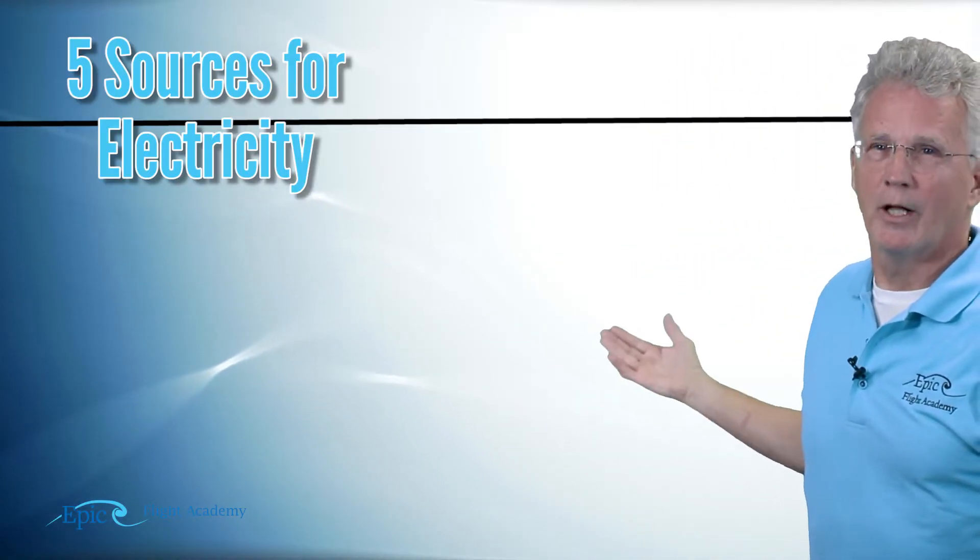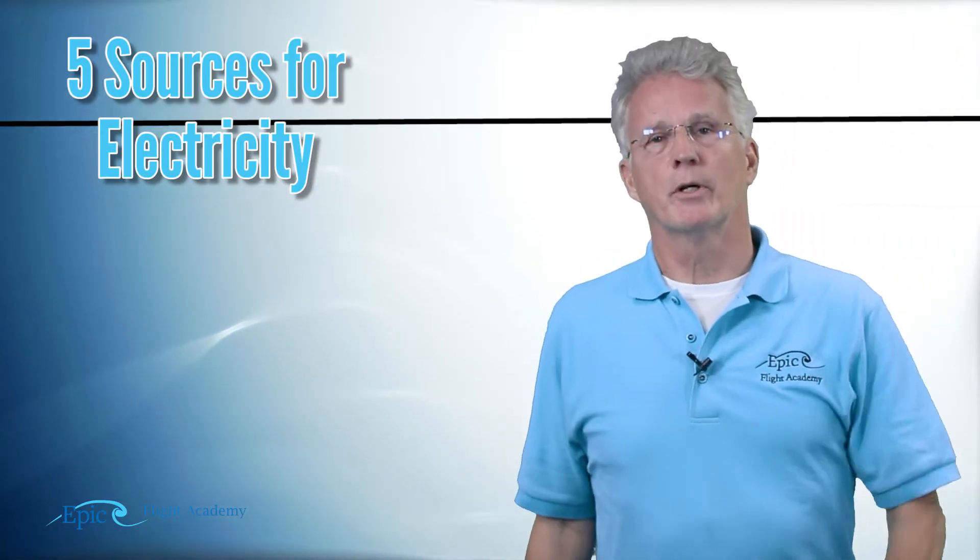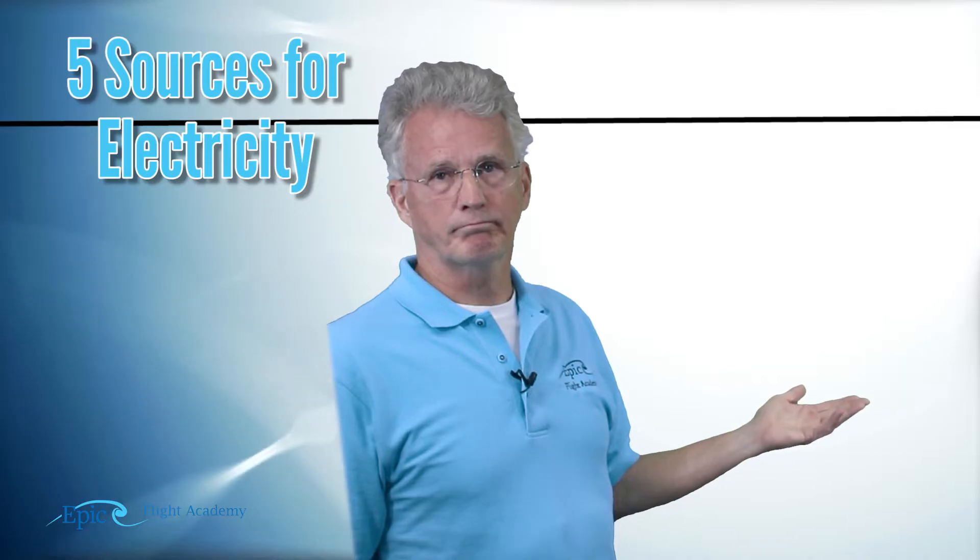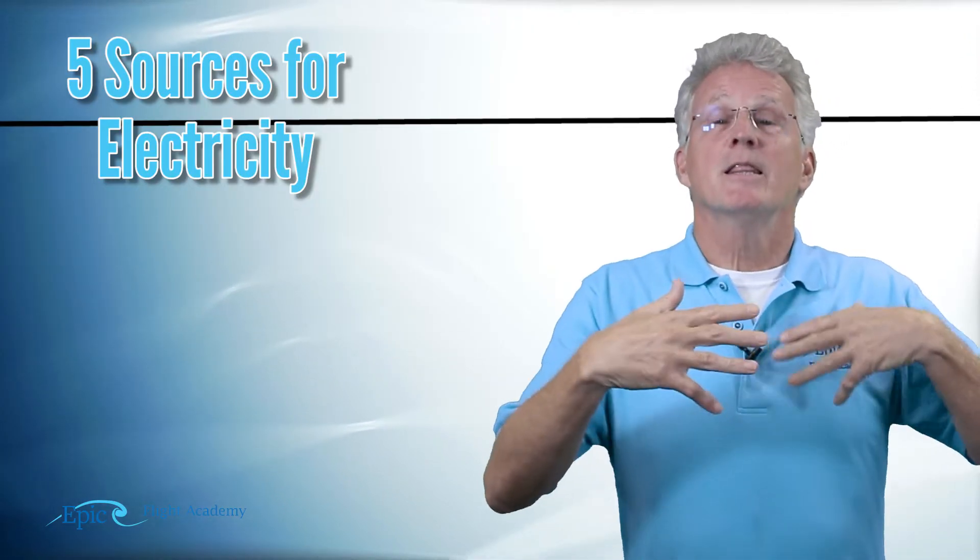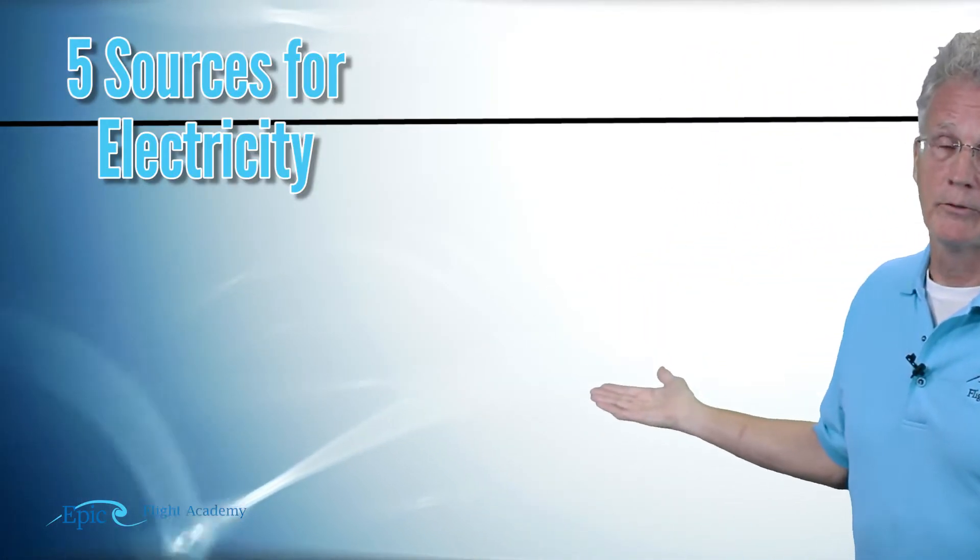To help us understand electrical systems, we understand that there are five sources for electricity. The first source is an alternator or a generator - that's electromechanical. The second source for electricity is chemistry. You all have this probably in your cell phone or your iPad - batteries are chemistry. The third source for electricity is heat. We use heat as a source for some of our mechanical and engine indicating systems. The fourth source is pressure - pressure on crystals, quartz, diamonds. These are used in electronic components.